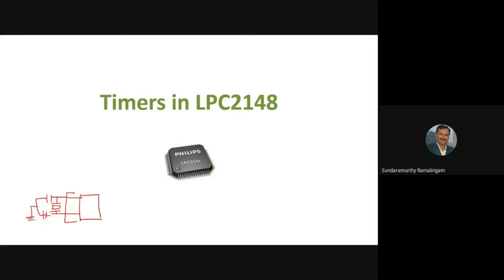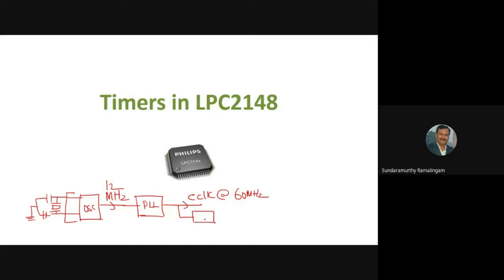The oscillator gives a 12 MHz output. This is then going to our PLL, which gives a CPU clock or CCLK at 60 MHz. We then divide this by the VLSI peripheral bus divider by a suitable factor. Though we had different choices, we derived PCLK at 60 MHz by putting this divider as one, so both our CPU clock and peripheral clock PCLK are at 60 MHz.